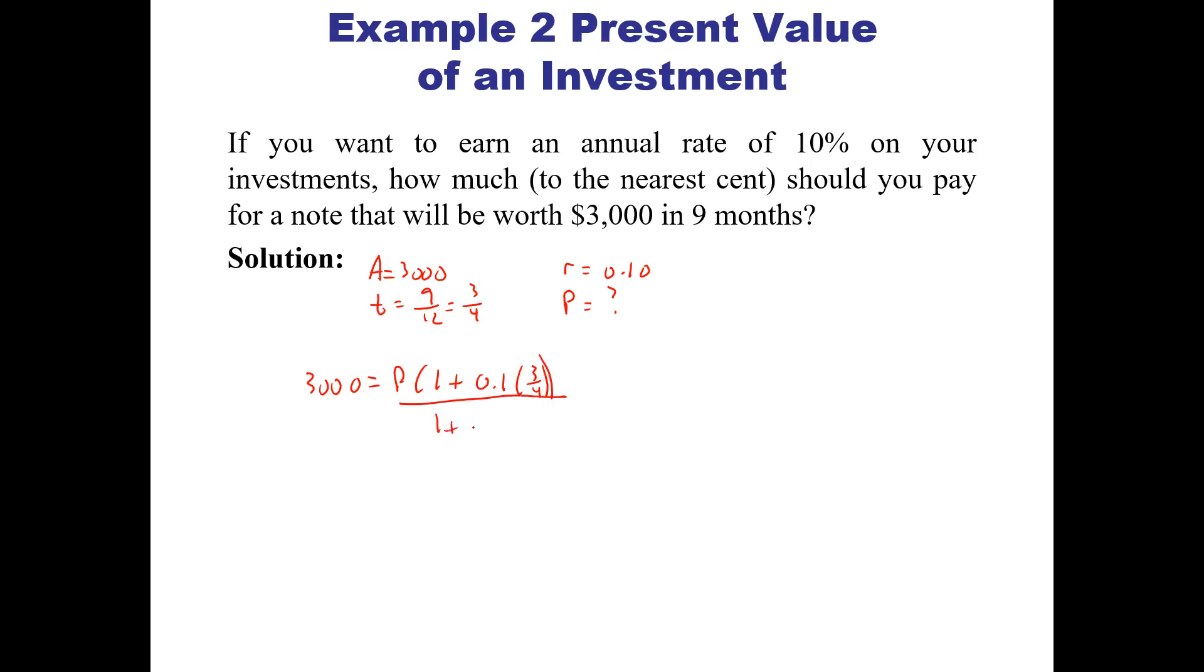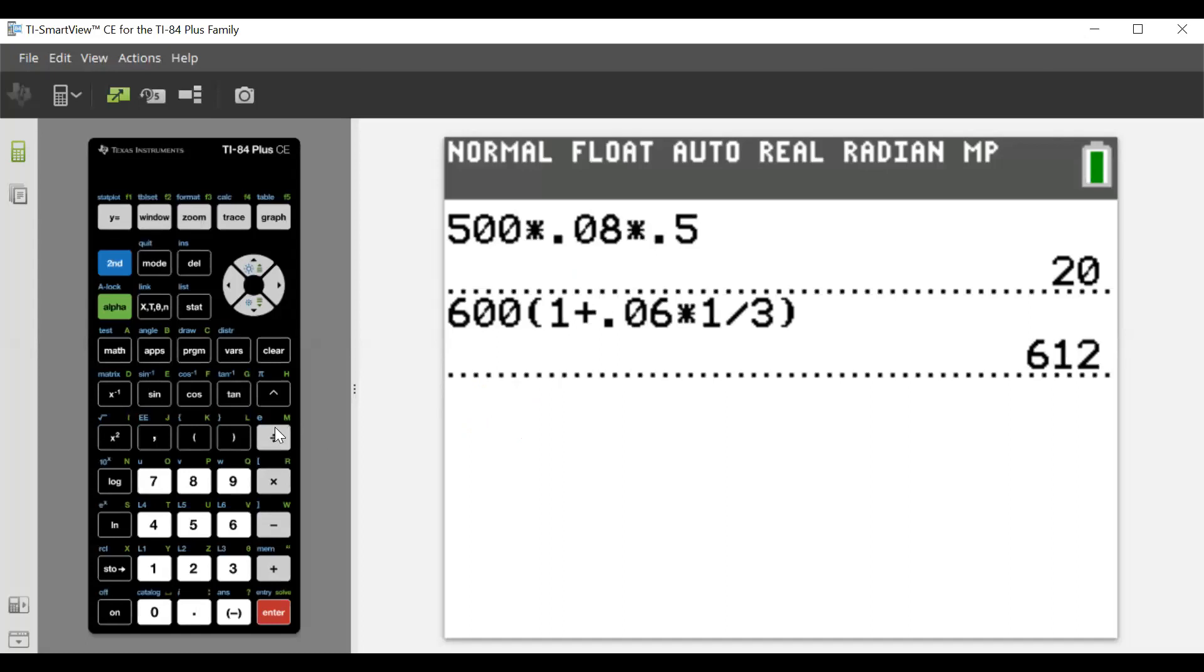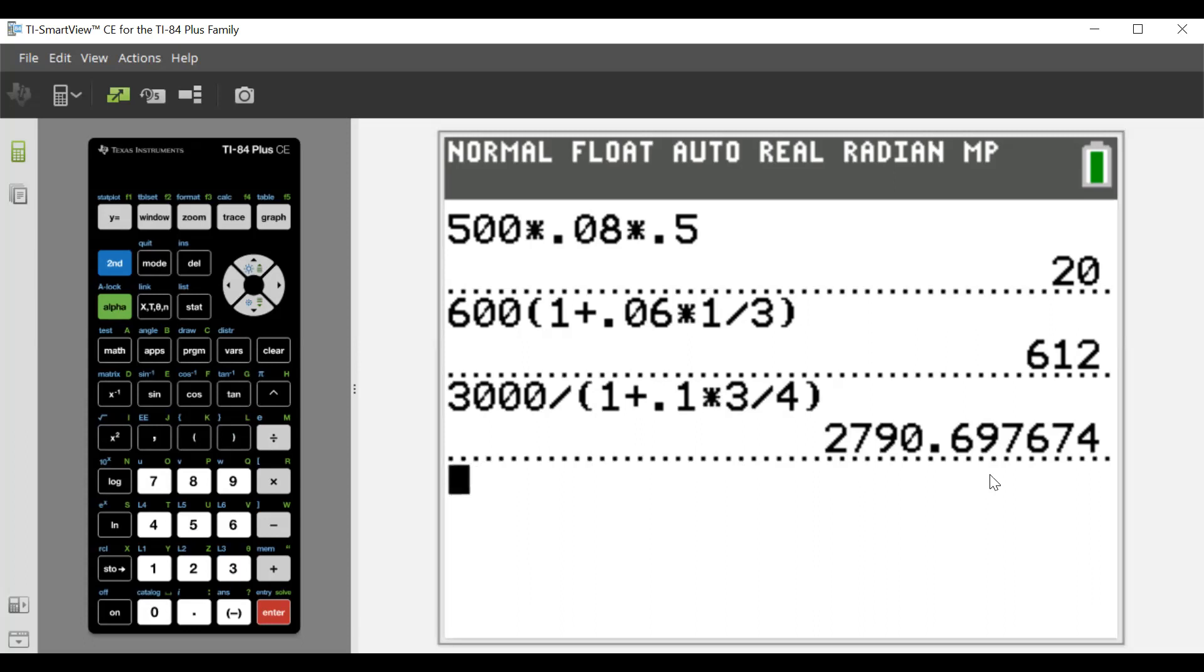We have 3,000 divided by (1 + 0.10 times 3/4). That gives us $2,790.697. The problem said to round to the nearest penny, so we round the 69 up to 70.